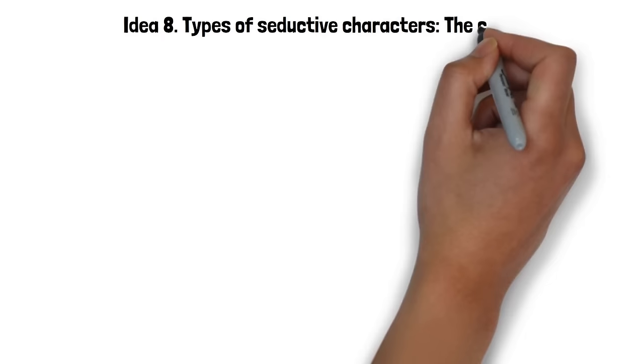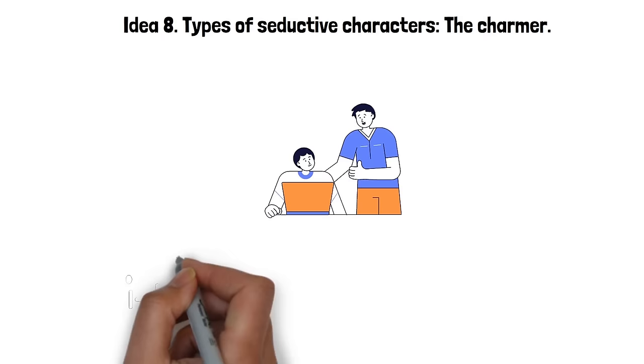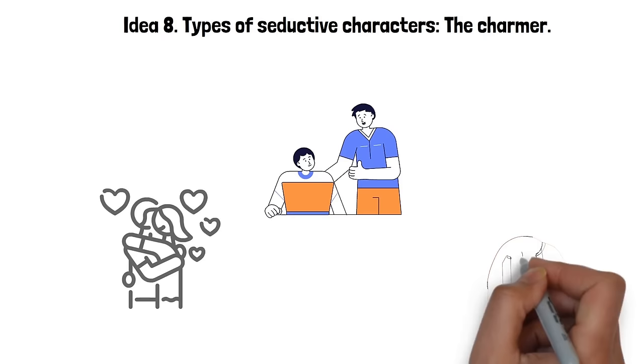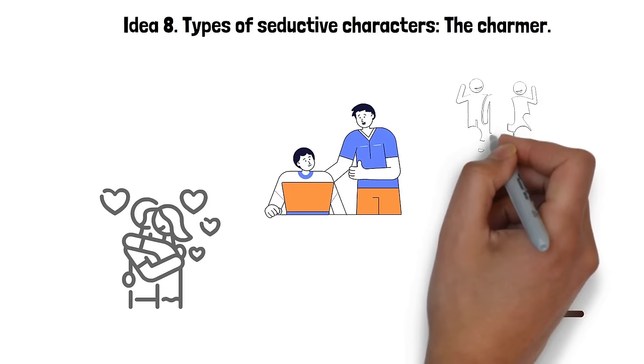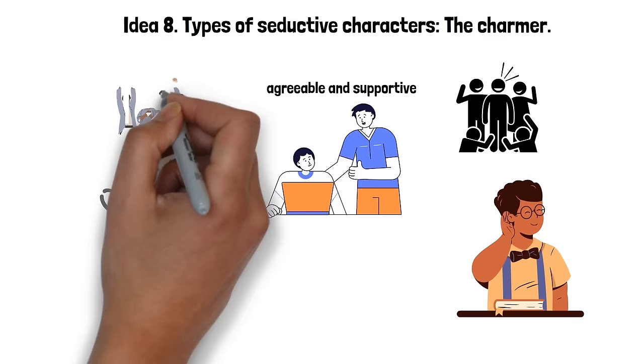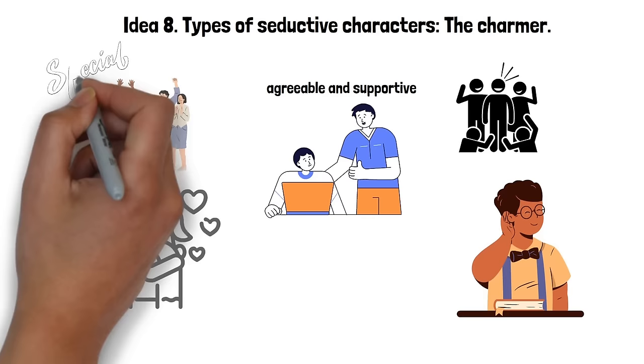Idea 8. Types of seductive characters. The charmer. A charmer is someone who captivates through their understanding of others and their ability to make people feel good about themselves. Unlike those who seduce through allure or enigma, charmers focus on their target, making them feel important and valued. They are skilled listeners and communicators, often exuding warmth and understanding. They excel in smoothing over conflicts, and they are able to appeal to different kinds of people. They are agreeable and supportive, which fosters a sense of comfort and trust. This character's charm lies in their ability to create a positive and uplifting environment, making their target feel special, seen and appreciated. Their charm is about the other person, not about themselves.